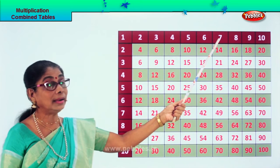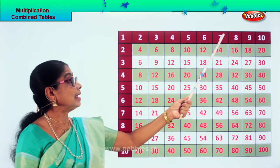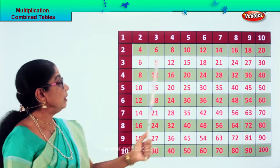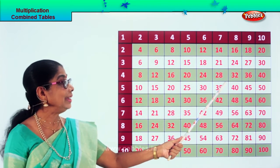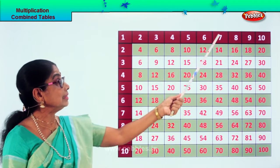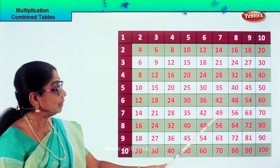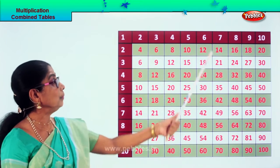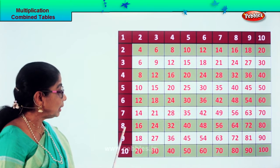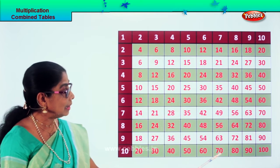Seven ones are seven, seven twos are fourteen, seven threes are twenty-one, seven fours are twenty-eight, seven fives are thirty-five, seven sixes are forty-two, seven sevens are forty-nine, seven eights are fifty-six, seven nines are sixty-three, seven tens are seventy.